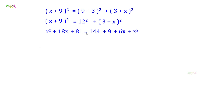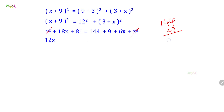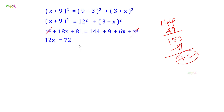Since X square appears on both sides, they cancel. We get 18X plus 81 equals 153 plus 6X. Rearranging: 18X minus 6X equals 153 minus 81, so 12X equals 72. Therefore X equals 6.